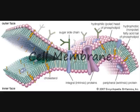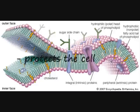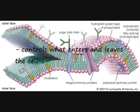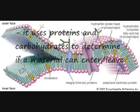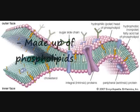The cell membrane is the outermost layer of the cell, and its purpose is to provide the cell with protection and control what enters and leaves the cell using proteins and carbohydrates to determine if a particle can enter or leave. The cell membrane is made up of phospholipids whose tails avoid water, thus making them form the way they do in two rows, tails facing in, forming the membrane.